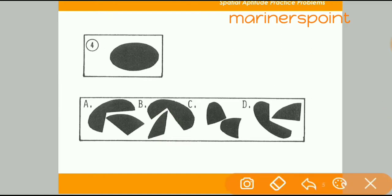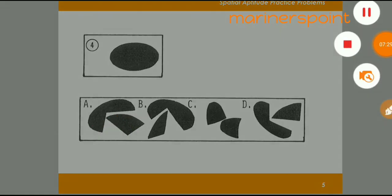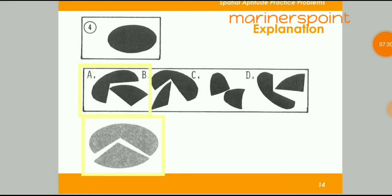Let's check option A — this will sit here and this will be here. Then our right answer will be A. See the right answer — it is A.